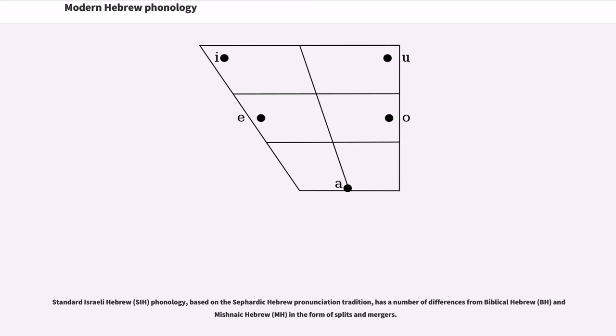Standard Israeli Hebrew (SIH) phonology, based on the Sephardic Hebrew pronunciation tradition, has a number of differences from Biblical Hebrew (BH) and Mishnaic Hebrew (MH), in the form of splits and mergers.